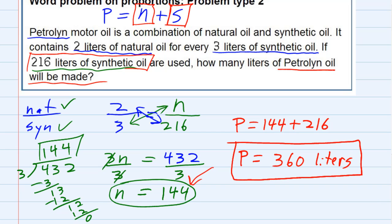So a two step process here. One to figure out the natural and then once we know that, we take the other information given to actually find the total Petrolin.